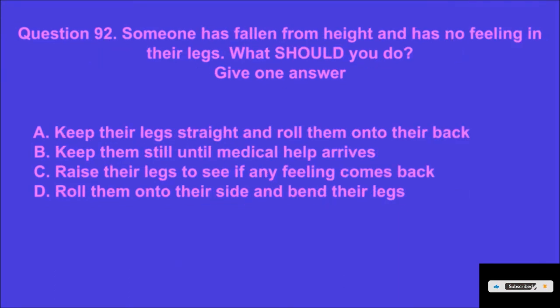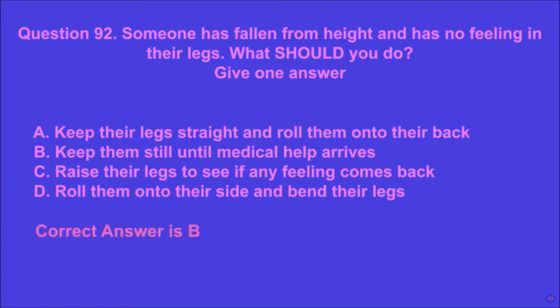Question 92: Someone has fallen from height and has no feeling in their legs. What should you do? Give one answer. A: keep their legs straight and roll them onto their back, B: keep them still until medical help arrives, C: raise their legs to see if any feeling comes back, D: roll them onto their side and bend their legs. B is the correct answer.